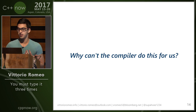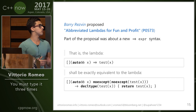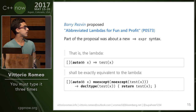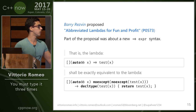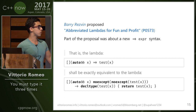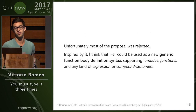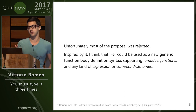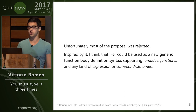So why cannot the compiler do this for us? There was a proposal by Barry Revzin called 'Abbreviated Lambdas for Fun and Profit,' which proposed a new arrow-expression syntax that expanded a lambda using that syntax with an expression on the right-hand side to what you see below. This new body introduction syntax for lambdas generated all the boilerplate for you and was also terse. Unfortunately, it got rejected — most of it — and that made me really sad because I was looking forward to it. But we could use the same idea to have something generic, like a new function body introduction syntax that supports anything and generates the triplication for you.